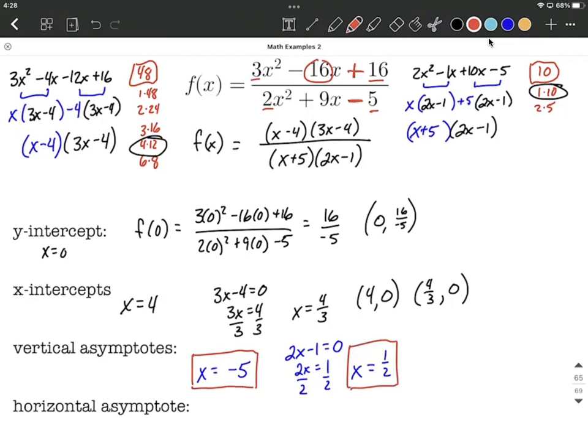Finally, our horizontal asymptotes. Horizontal asymptotes are dictated by the degrees of the numerator and denominator. The degree of the numerator, since it's in descending order, is 2. The degree of the denominator, the highest power on x here is 2. The rule says that when they have the exact same degree, the horizontal asymptote is going to be the ratio of leading coefficients.